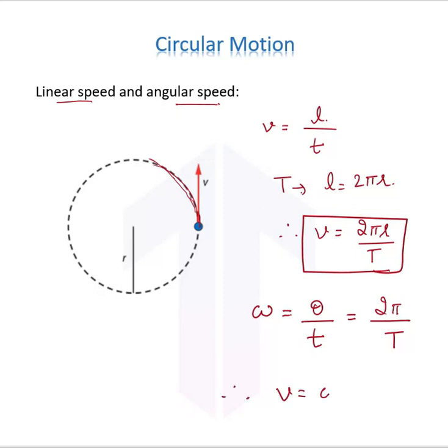Therefore, V equals ωr because 2π by T represents ω. That's the relation between linear and angular speed.